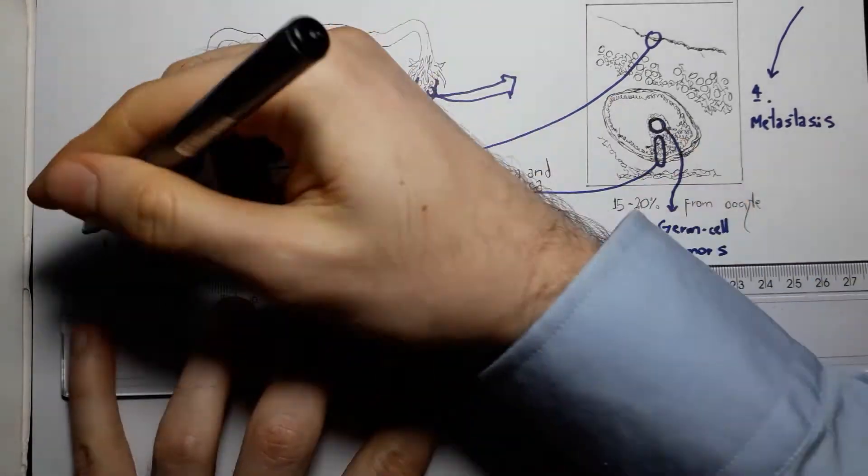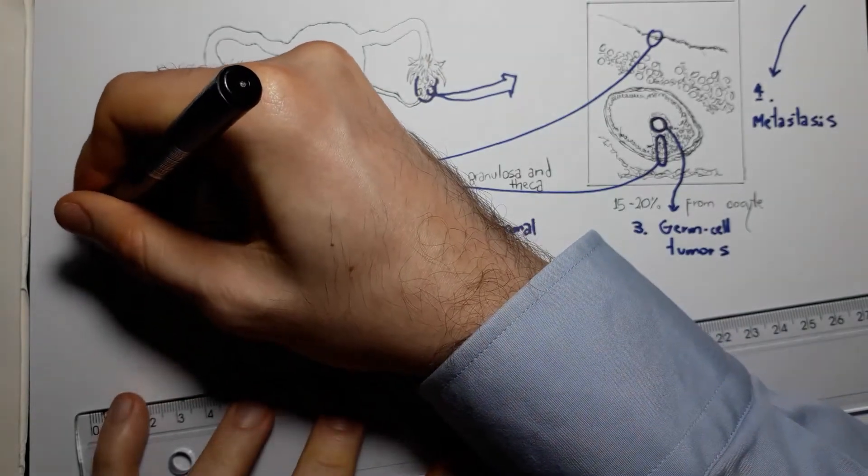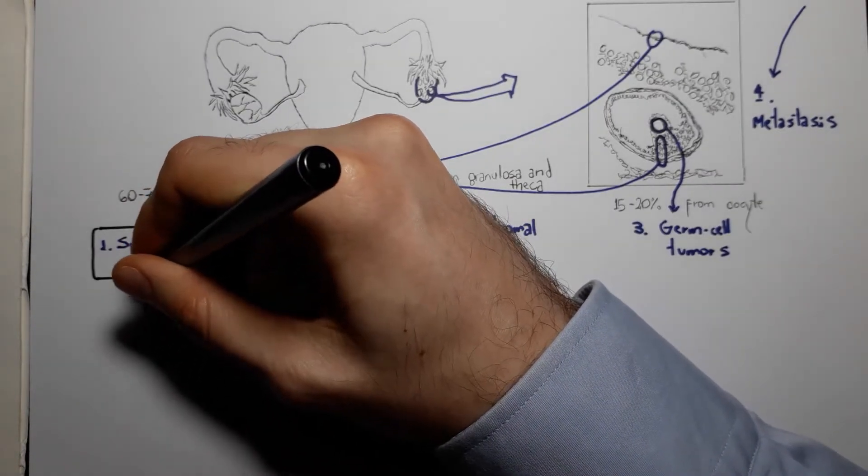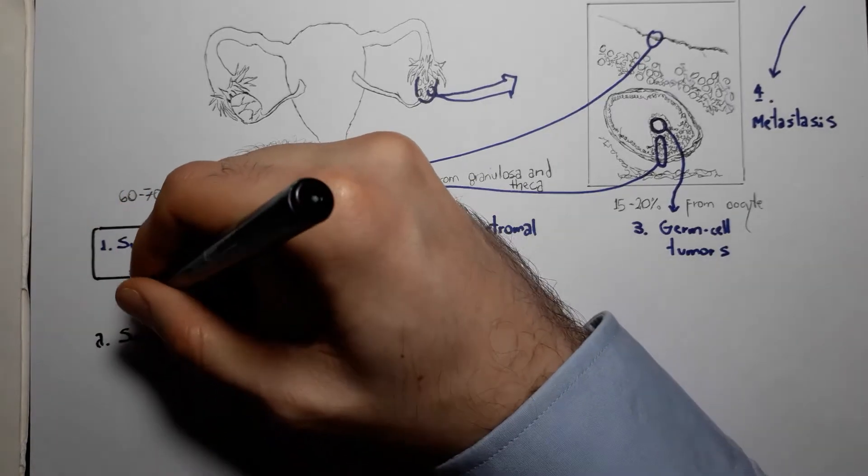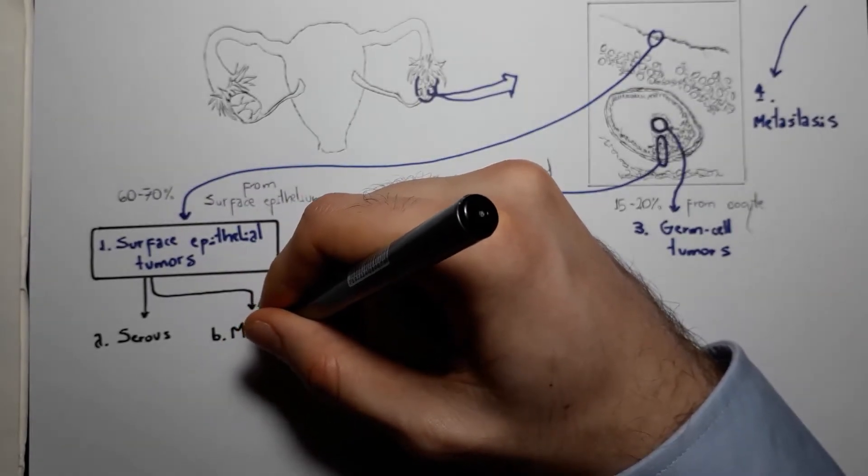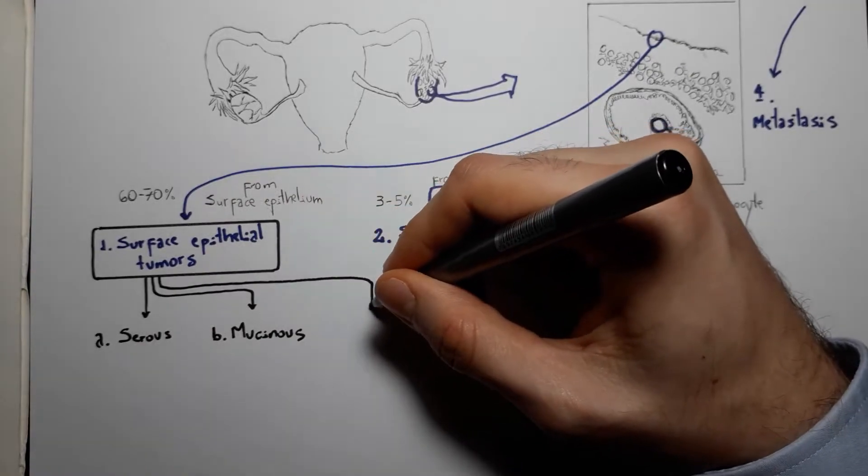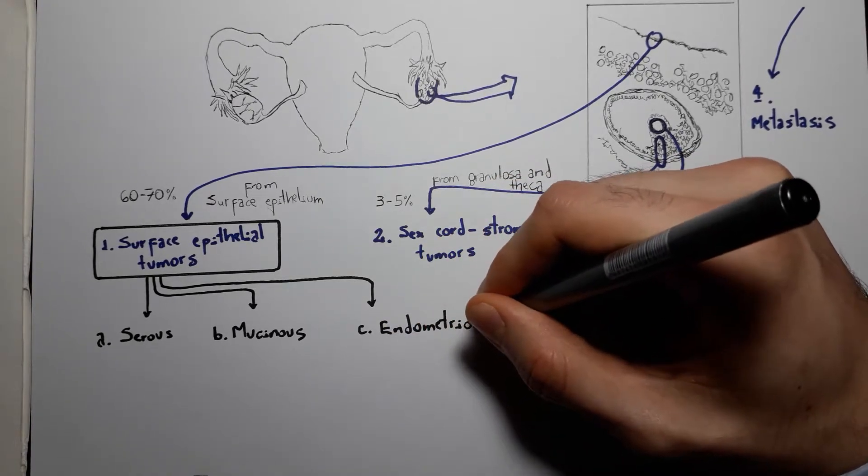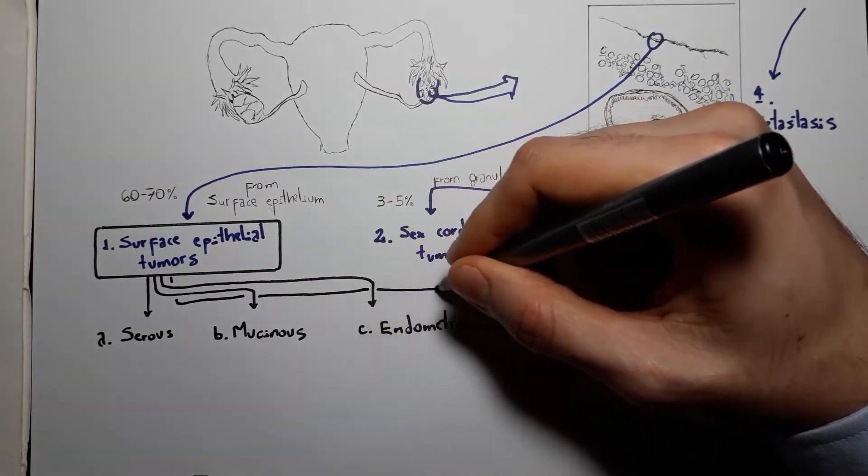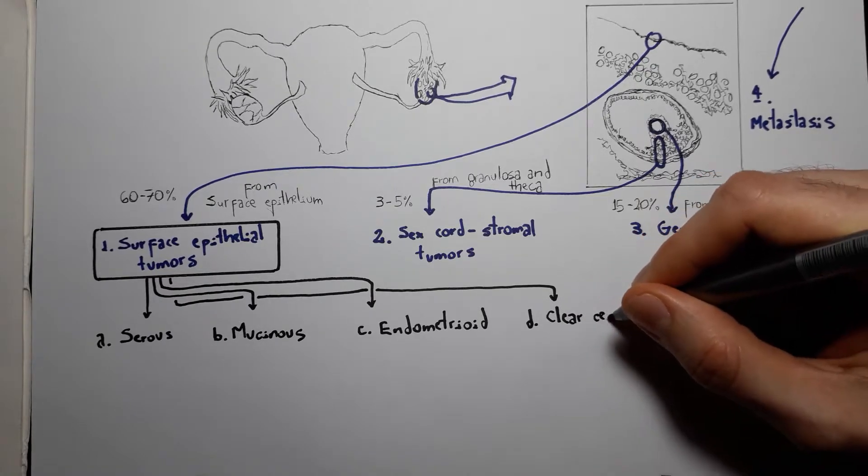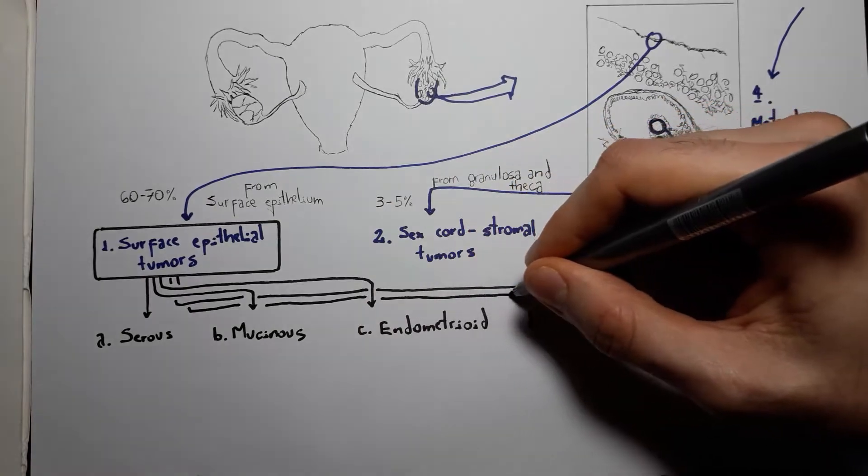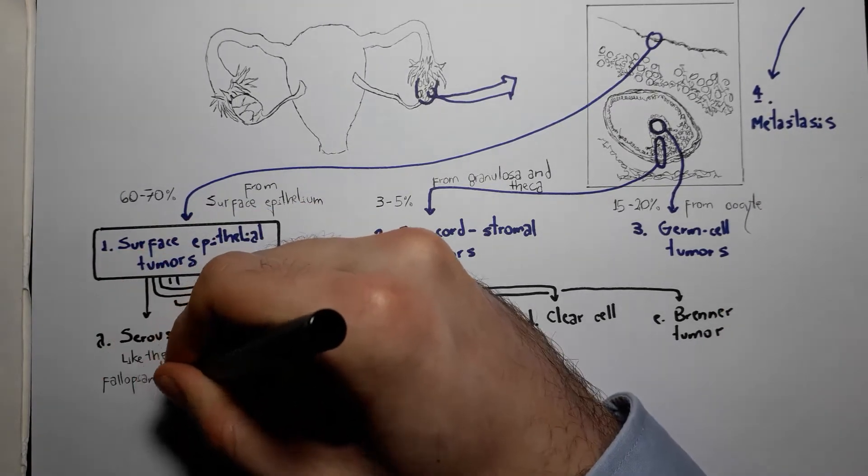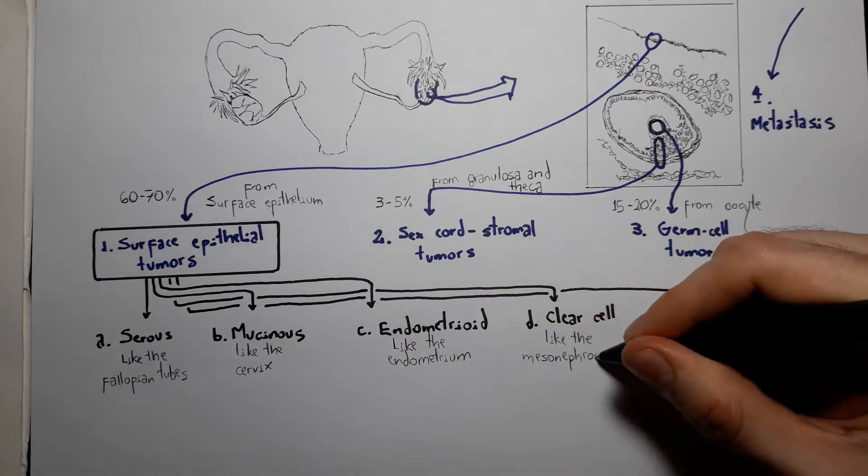Surface epithelial tumors of the ovary derive from celomic epithelium. Therefore, they can differentiate into many celomic structures. They can present as serous, resembling the fallopian tube; as mucinous, resembling the cervix; as endometrioid, resembling the endometrium; as clear cell, differentiating as mesonephros; and finally, the Brenner tumor, differentiating like urothelium. So we have five possible ways in which the tumors can differentiate.